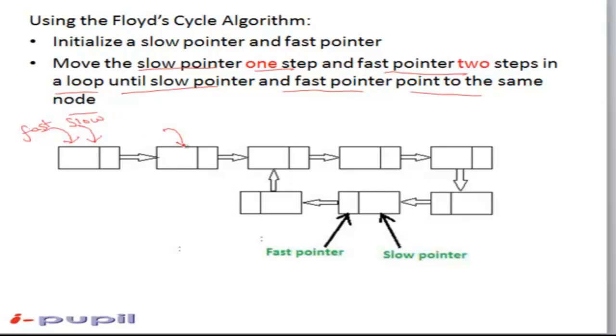The slow pointer moves with the speed of one step whereas the fast pointer moves with the speed of two steps. When both of them point to the same node, a loop is detected.